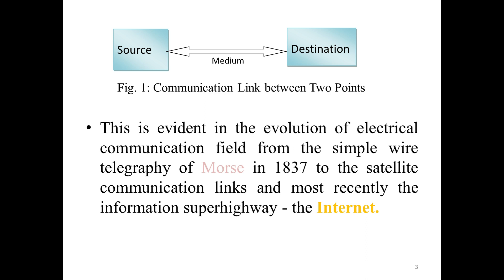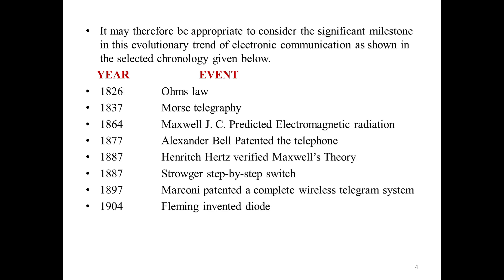This is evident in the evolution of the electrical communication field from the simple wire telegraphy of Morse in 1837 to satellite communication links and most recently the information superhighway, that is the internet. It may therefore be appropriate to consider the significant milestones in this evolutionary trend of electronic communication as shown in the selected chronology given below.